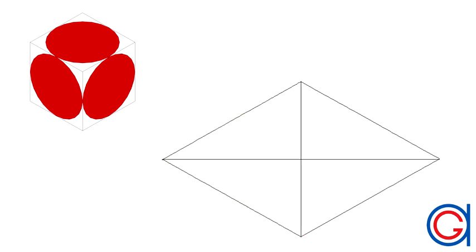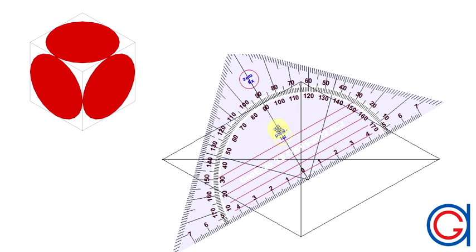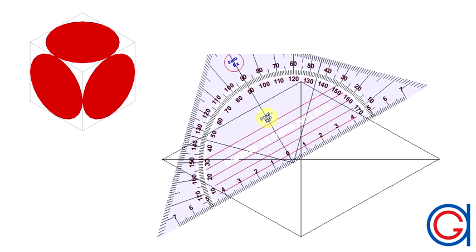The next step is to draw parallel lines to both sides of the rhombus passing through the intersection of our previously drawn diagonals as can be seen here in the video.